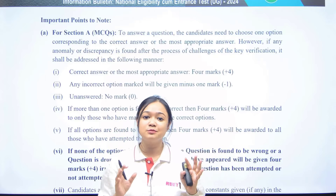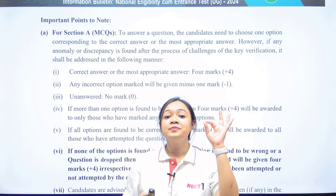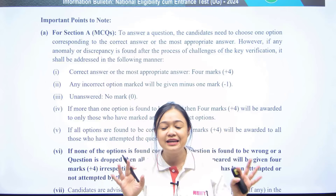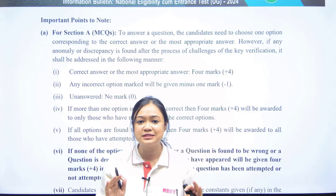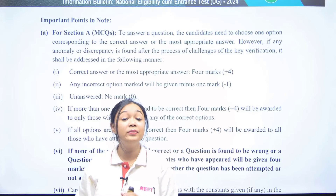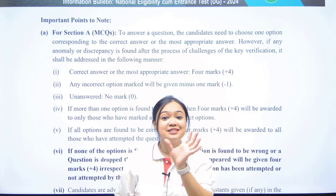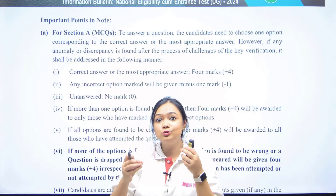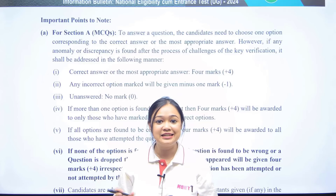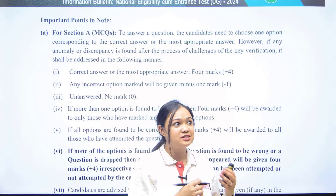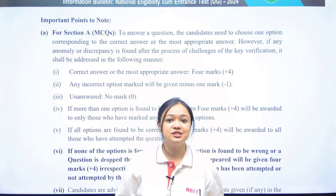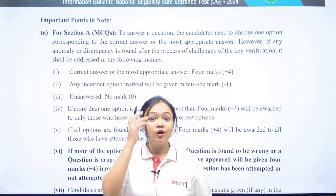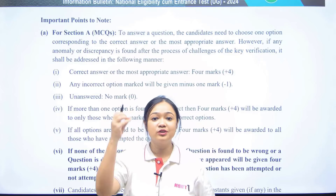It's very important for the latest information bulletin — there is a different marking scheme in Section A and Section B. I will explain in a very easy way. Section A and Section B have different marking schemes, so while you do this tukka scene and take this calculated risk, you should be careful of where risk is right and where risk is wrong.